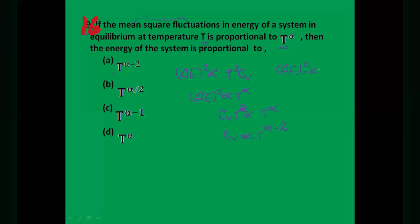Since CV = ∂U/∂T ∝ T^(α−2), we integrate to get U. Integrating T^(α−2) gives T^(α−1), so U is proportional to T^(α−1). The correct option is option C. Just read the question, put in the formula, do the simplification correctly, and you get the answer.